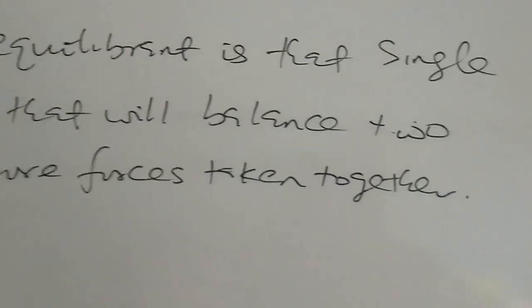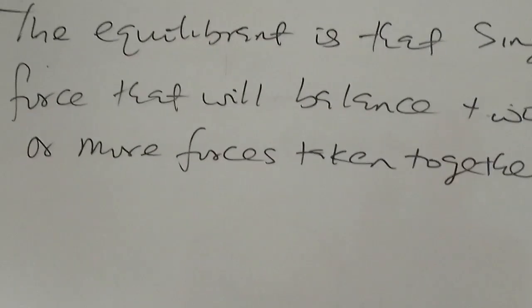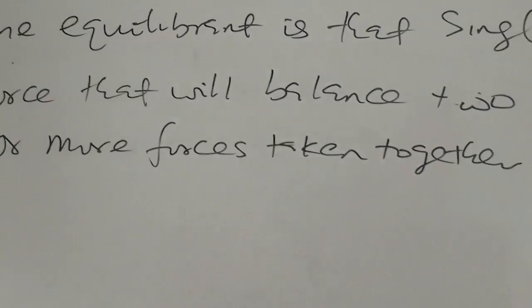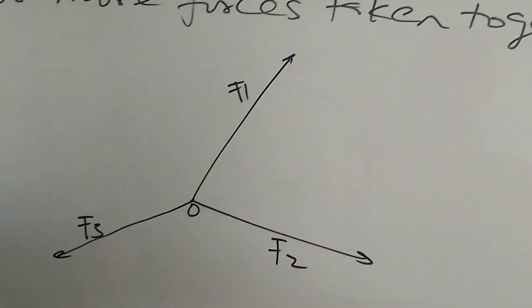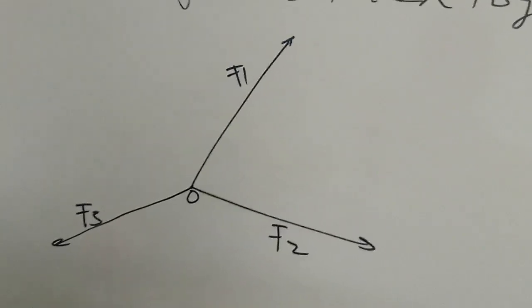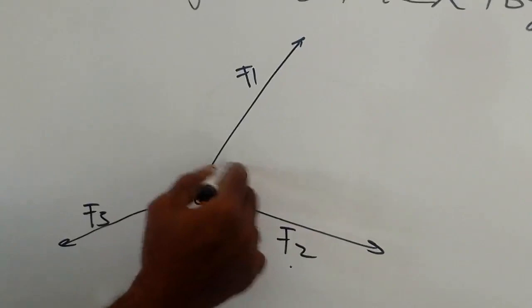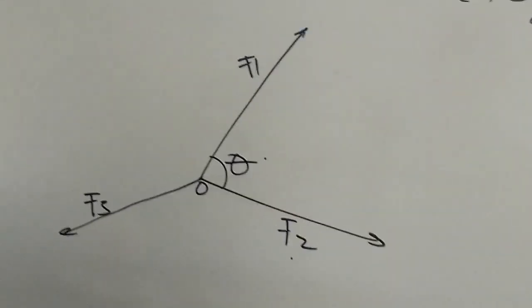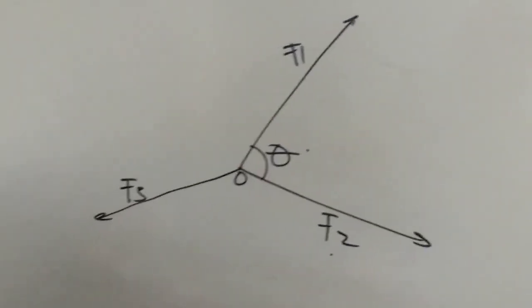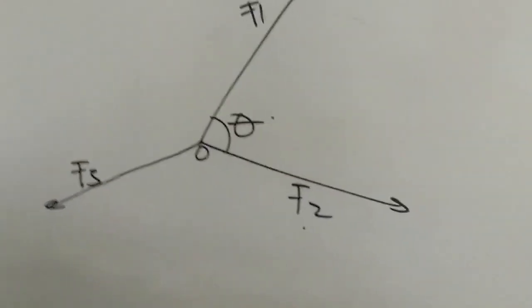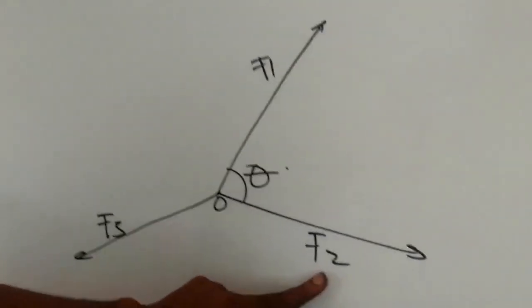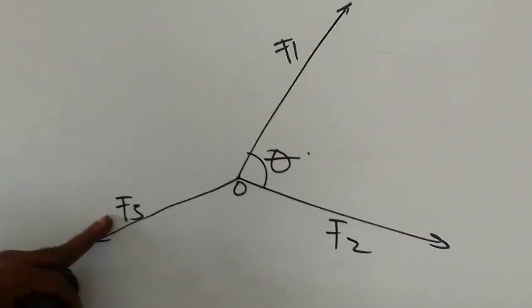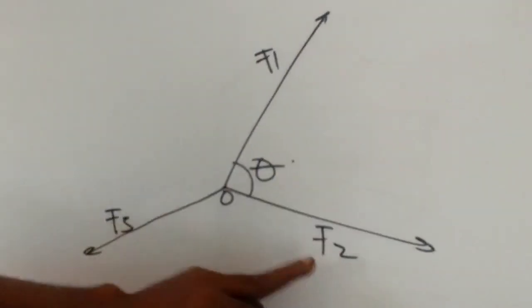In our previous video we covered the Resultant of forces. So we're going to see the relationship between the Resultant and the Equilibrant of forces. For instance, let's assume we have force F1, F2, and F3 acting at a point O, and these three forces are at equilibrium. Let the angle between F1 and F2 be theta. If the three forces F1, F2, F3 are at equilibrium, what it means is that each force is an equilibrant of the other two — F1 is the equilibrant of F2 and F3, F2 is the equilibrant of F1 and F3, and F3 is the equilibrant of F1 and F2.